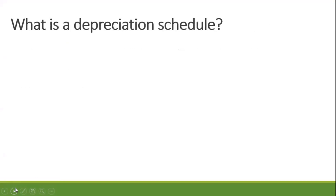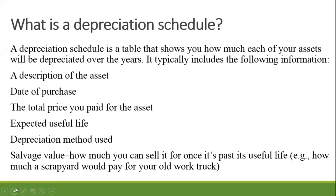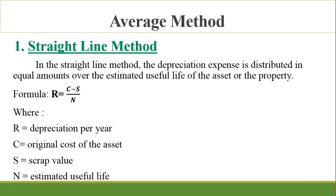A depreciation schedule is a table that shows how much each of your assets will be depreciated over the years. It typically includes: a description of the asset, date of purchase, total price paid for the asset, expected useful life, depreciation method used, and salvage value — meaning how much you can sell it for once it's past its useful life, for example how much a scrap yard would pay for your old work truck.